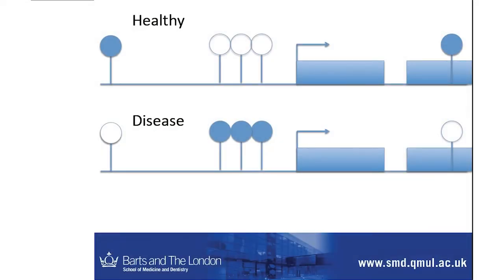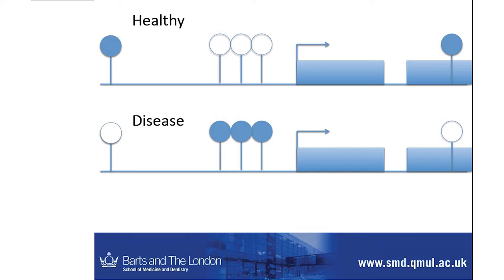The key thing here is that if we have differentially methylated probes found in our experiment, the question is: what do these mean? We know there are different positions on the genome where we understand some better than others. For example, in promoters there's a fairly strong correlation with gene expression, but other positions — gene body, enhancer regions, or completely away from a gene — we're less clear on what that change means in real terms and what biological consequence it actually has.